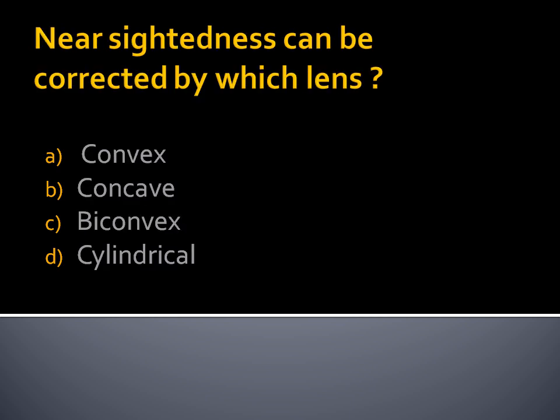Near sightedness can be corrected by which lens? In near sightedness, we can see near objects but cannot see far objects. Option A, Convex lens. Option B, Concave lens. Option C, Biconvex lens. Option D, Cylindrical. Our answer is Concave lens.